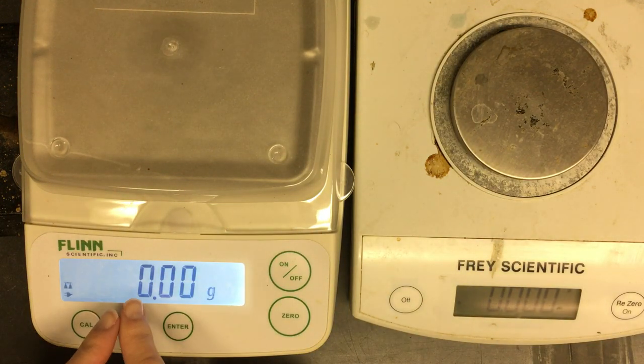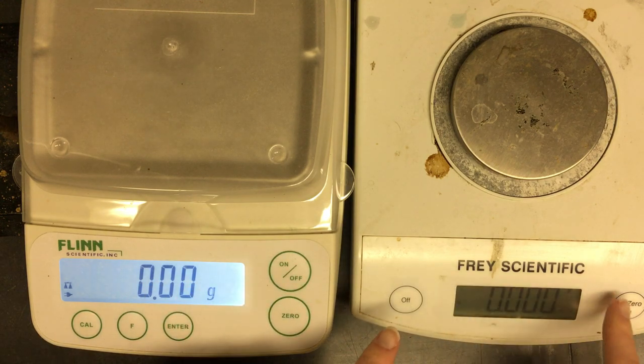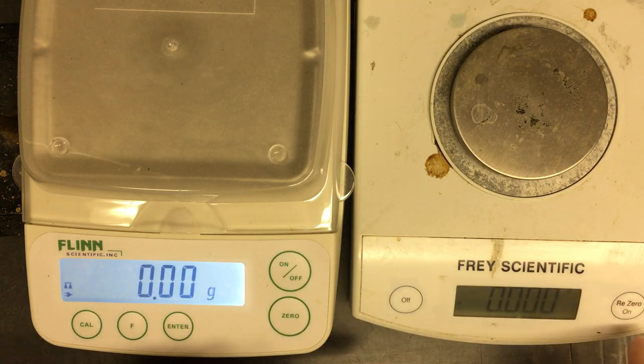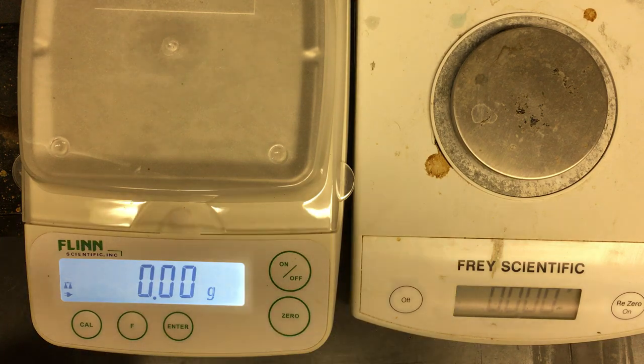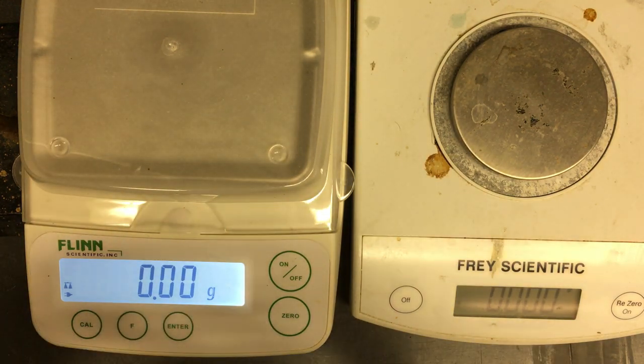This one is a centigram balance, so it measures to the nearest centigram. This one is a milligram balance, so it measures to the nearest milligram. And then there are some rulers on your Google Doc that you will be using to measure length.